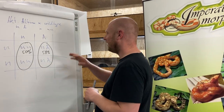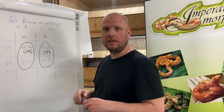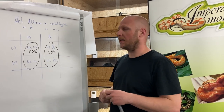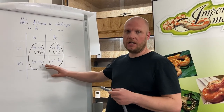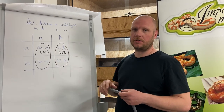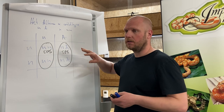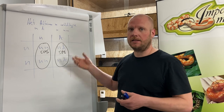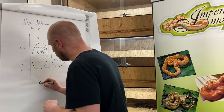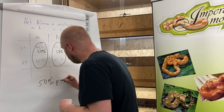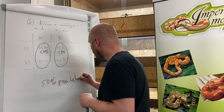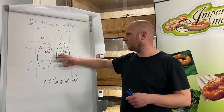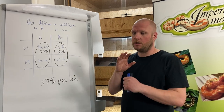So we have 50 percent non-hets and 50 percent 100 percent het albino. Again, the challenge is all these animals are looking the same. So the chance, if you pick one animal out of this litter, is one out of two — a 50 percent chance it's a het albino. That's why every animal out of this litter is called a 50 percent pos head.